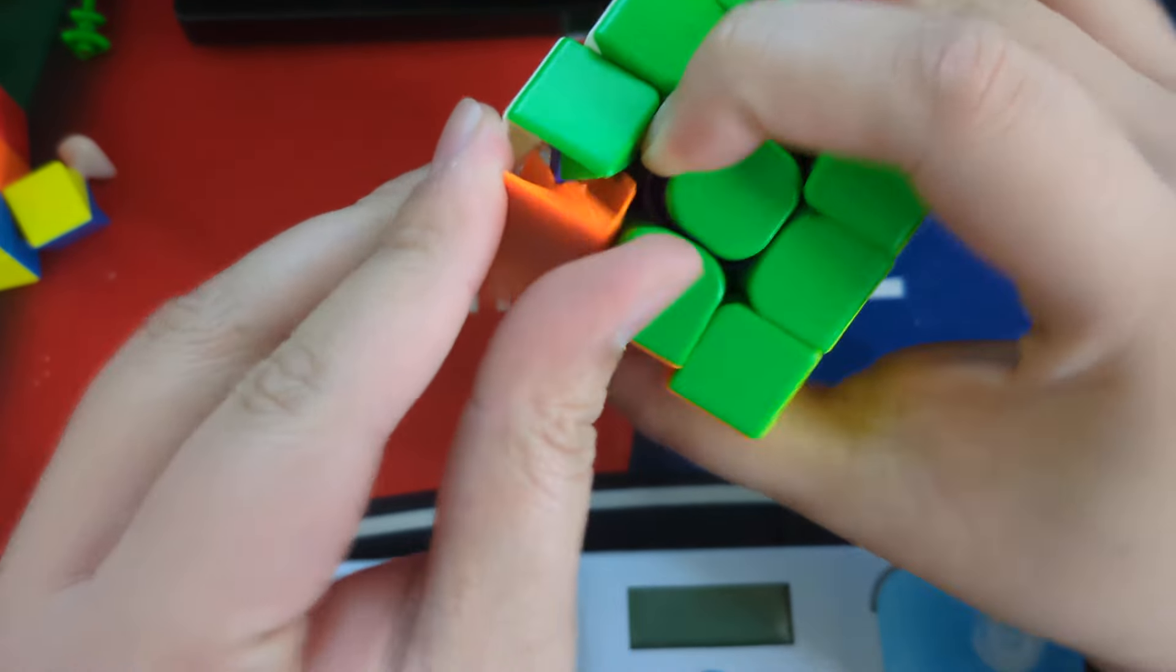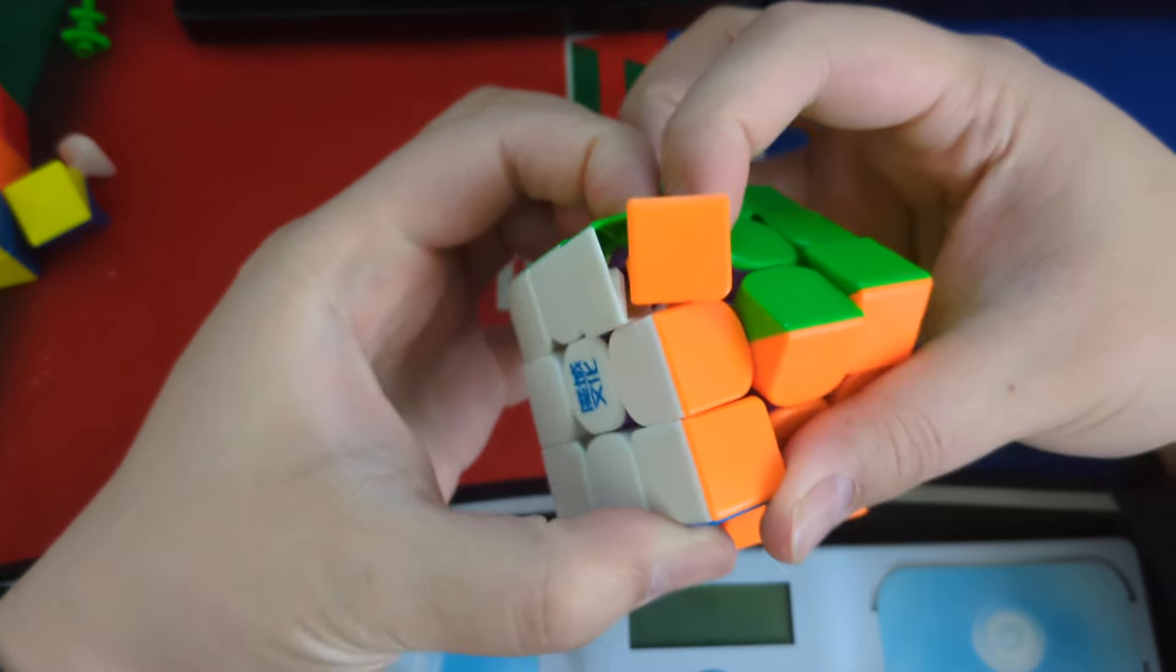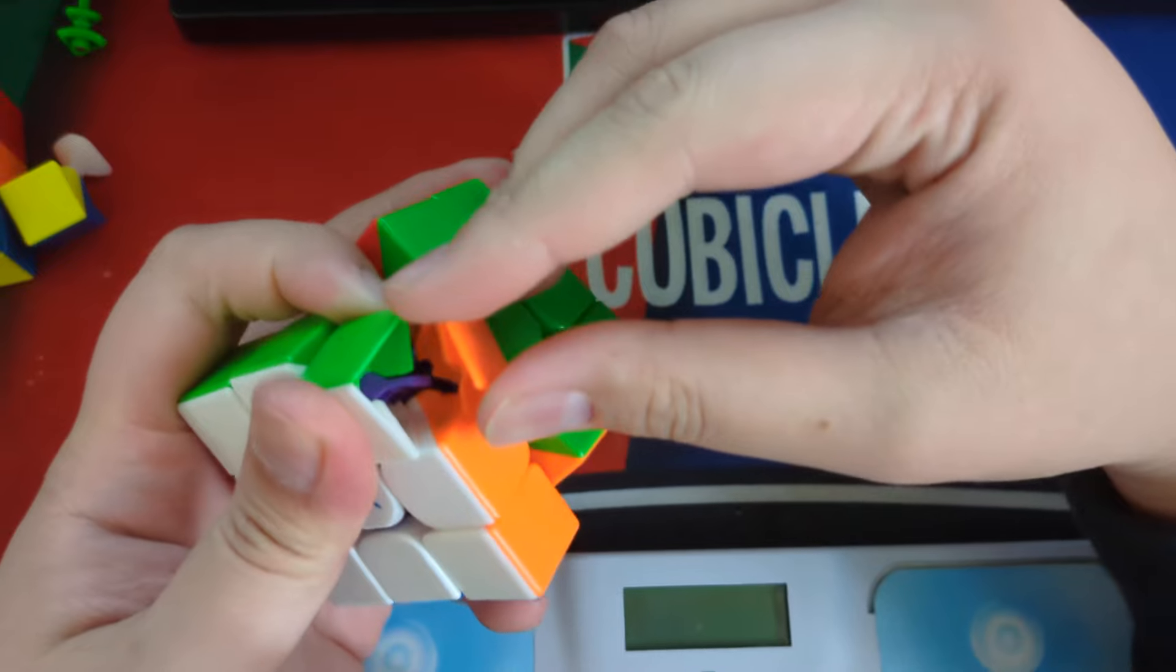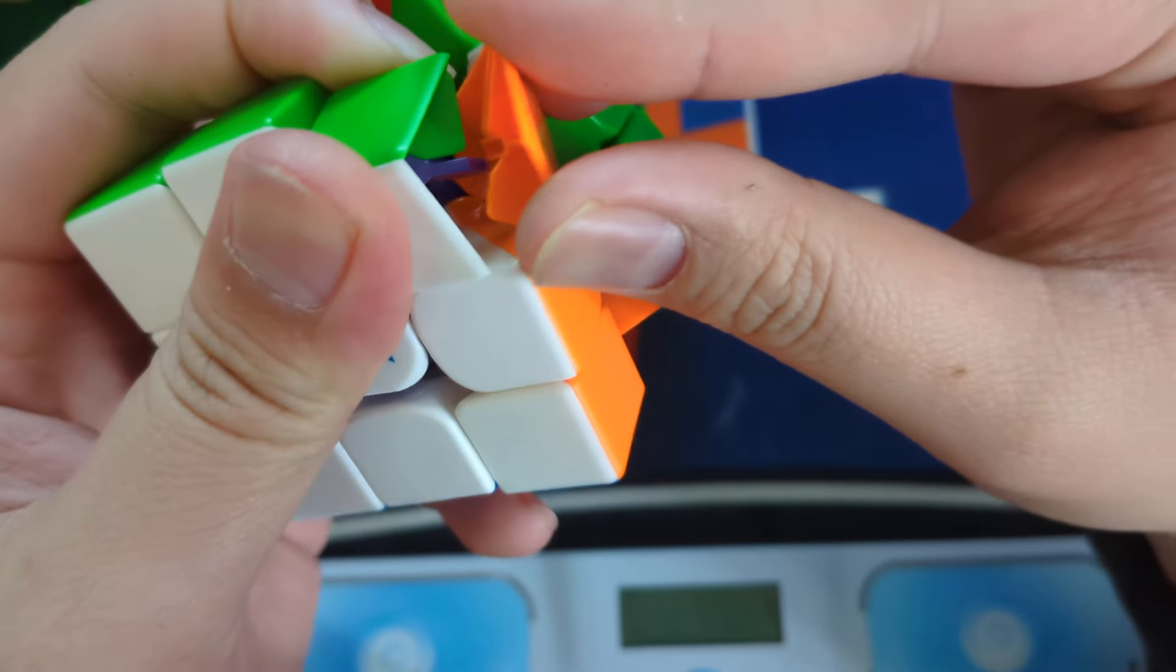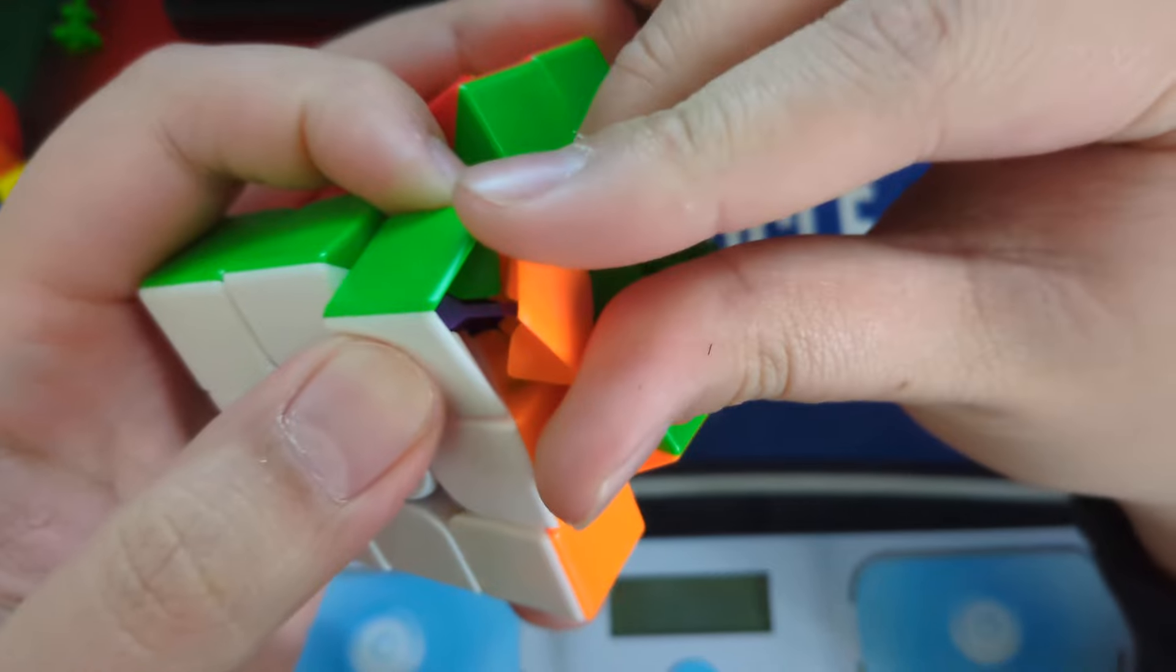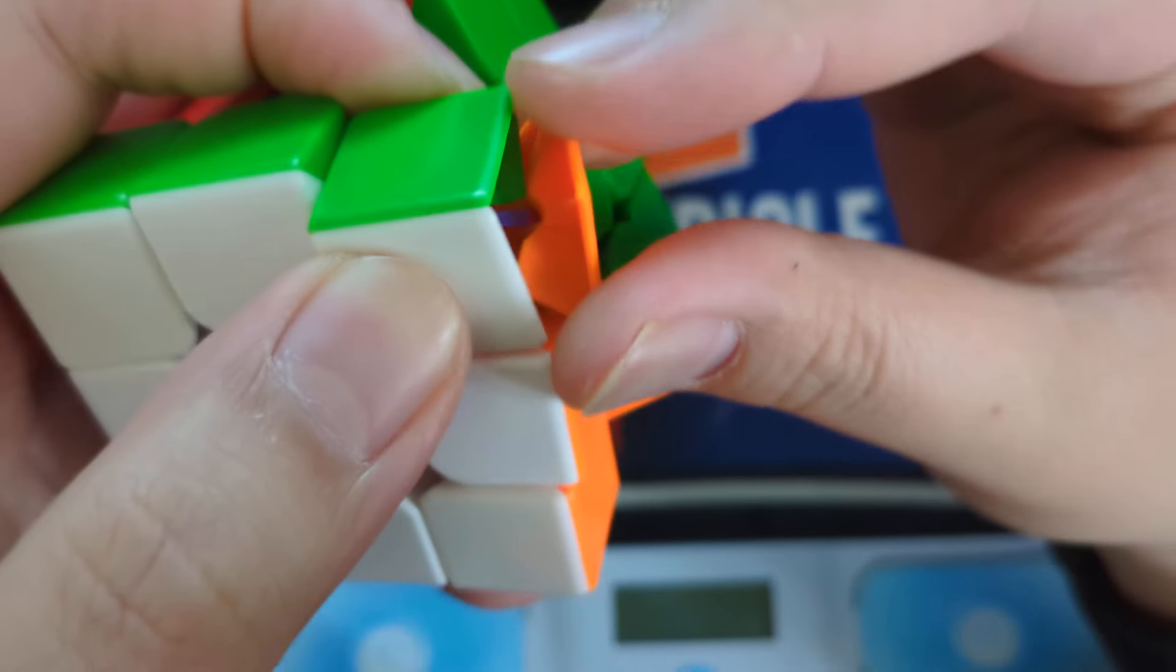So once we get that center peg in there, what actually happens is the rest should align okay, but we want to make sure that we're not forcing anything in. So here I have the center peg going in like that. It's in the slot.